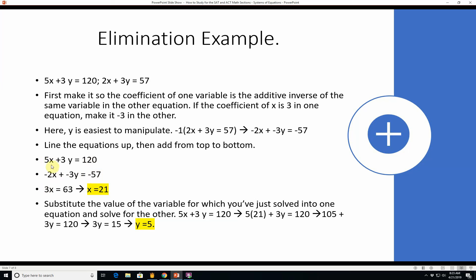Then we line the equations up and add from top to bottom. We have 5x plus 3y equals 120 and negative 2x minus 3y equals negative 57. You end up with 5x minus 2x is 3x. The y terms cancel. So we just end up with 3x equals 63. That means x is equal to 21. It's almost as though it's a contrived problem that I made up just for this demonstration, which I did. But that's what they do with SAT and ACT problems.